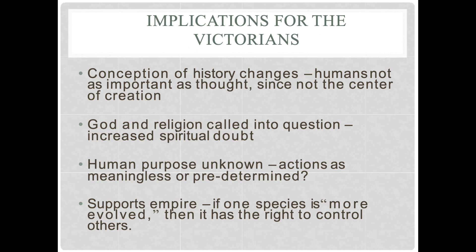There are several implications from the scientific conversations going on in the 19th century. Number one is that the conception of history begins to change. Rather than thinking that history is put in biblical terms, which would position the origins of the Earth at about 2000 years prior, what they're learning is that humans were not necessarily the center of creation and therefore were not as important to creation. Instead, they are just another species participating in a natural order rather than a divine order, which increases a lot of spiritual doubt.